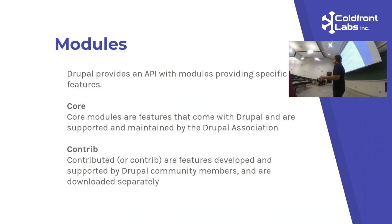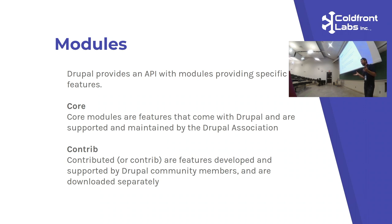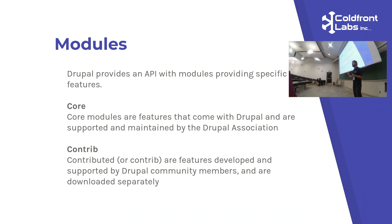Diving into modules inside Drupal, there are two classifications. The first is core — all the things that come with Drupal itself, including core modules and all the features you get out of the box. The second grouping is contrib — contributed modules that people have posted on Drupal.org. It has lists and lists of modules for doing all kinds of things, contributed by people who use Drupal and wanted to share their work.